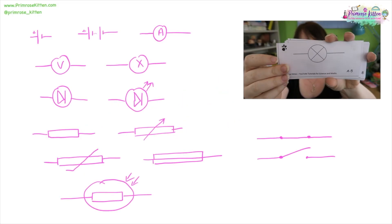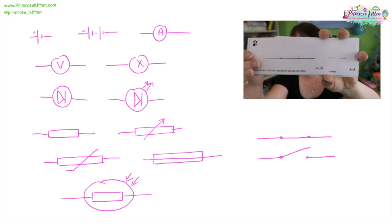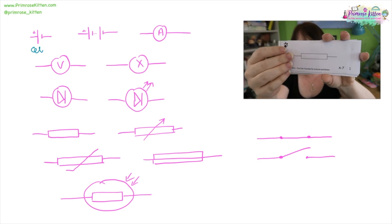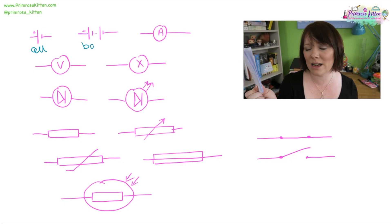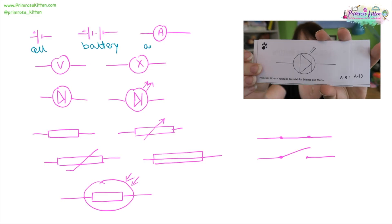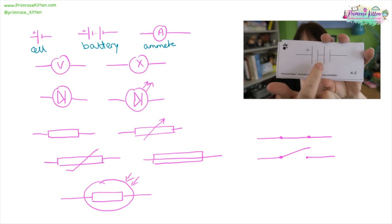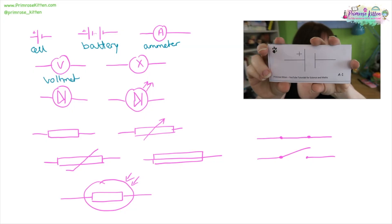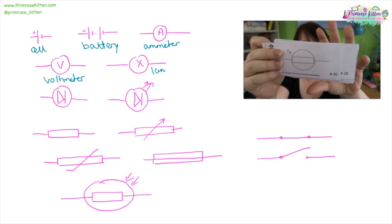You need to know all of these circuit symbols. I've made you handy flashcards for this, but here is a quick recap. This is a cell. This is a battery. You will notice that a battery is more than one cell put together. Here we have an ammeter, voltmeter, a lamp or a bulb,